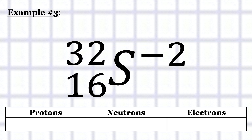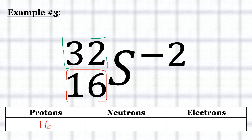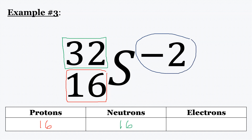Let's talk about notation in terms of charge. The atomic number 16 tells us we have 16 protons. The mass number 32 equals the number of protons plus neutrons, so we have 16 neutrons. In the upper right-hand corner, we have a charge of negative two, meaning there are two more electrons than protons — so with 16 protons, we need 18 electrons.